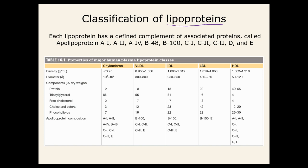Lipoproteins contain proteins, lipids, cholesterol, and there's a whole bunch of them that are categorized according to density. Chylomicrons are the lowest density one, and this would be for ingested fats. VLDL — very low-density lipoprotein — was the type of carrier used for lipids from the liver to be stored in adipose cells or processed for energy in the muscle.